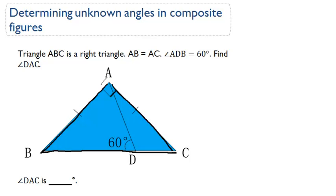Triangle ABC is a right triangle, so we know that this angle is 90 degrees because it's a right triangle. We're also given side AB and side AC are equal to each other, so we know not only is this a right triangle, but it's an isosceles triangle, so we know that these angles must also be the same.